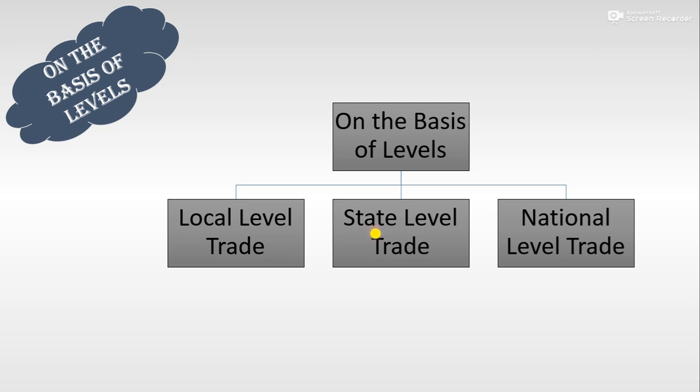Second: state level trade — jo ek hi state ke various districts ke beech mein ho raha hai. Yaani Haryana state ke alag-alag districts hain, un districts ke beech mein jo trade ho raha hai, that is called state level trade. Third: national level trade — trade among various states of a country. Haryana se maal Punjab mein ja raha hai, Punjab se UP mein, UP se MP mein, MP se HP mein. This level of trade is called national level trade.